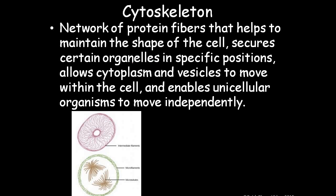The cytoskeleton is a network of protein fibers that helps to maintain the shape of the cell — like a skeleton system in the human body. It secures the organelles in specific locations, helps to keep the organelles from floating around, allows cytoplasmic vesicles to move within the cell, and enables certain organelles to move independently.